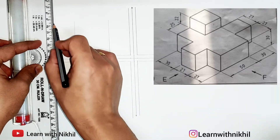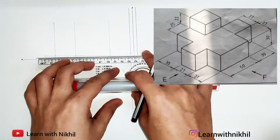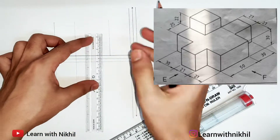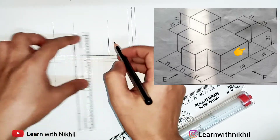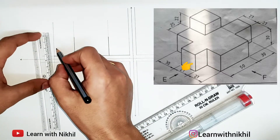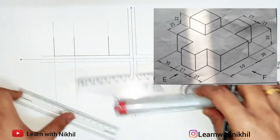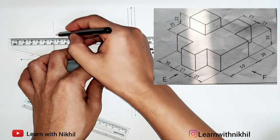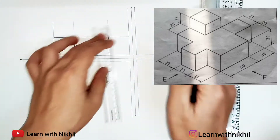Now we'll draw parallel lines through these points, extending them downwards as we'll also need them to draw the top view. Now we'll draw this baseline dark, as it is clearly visible in the front view. The height of this block is 30 millimeters, so I'm marking a dark line of 30 millimeters. This height of 30 millimeters is repeated on the adjacent sections as well, and then I'll draw a dark line from the top of these lines intersecting all of them.